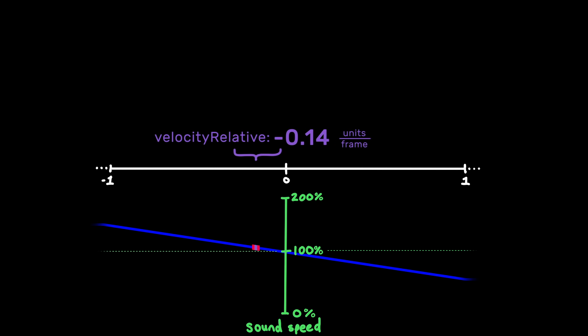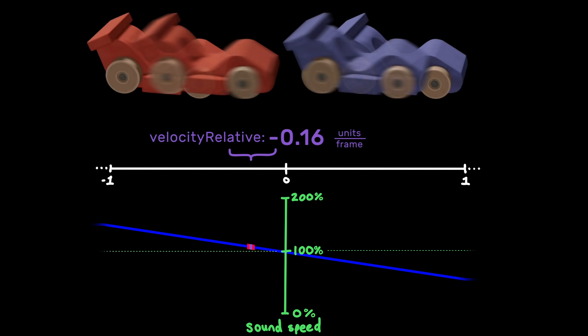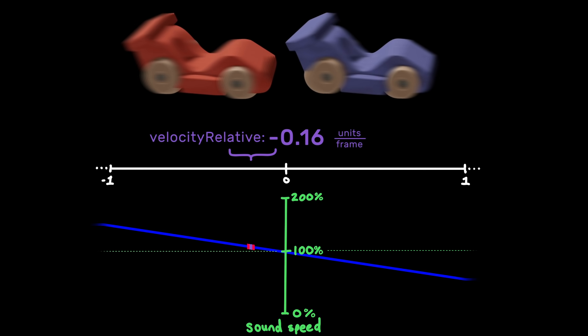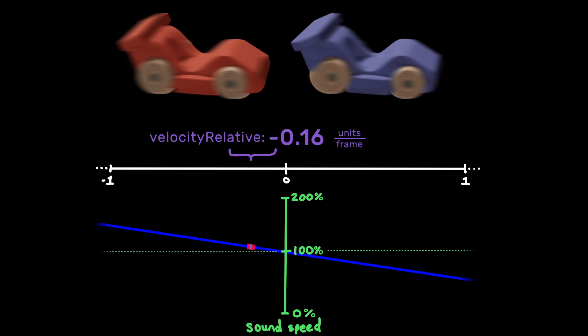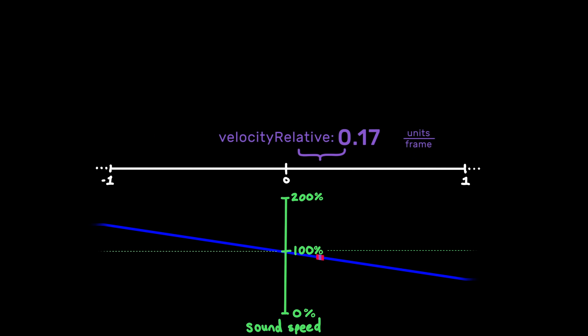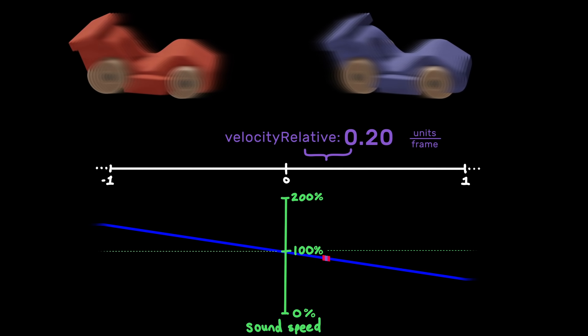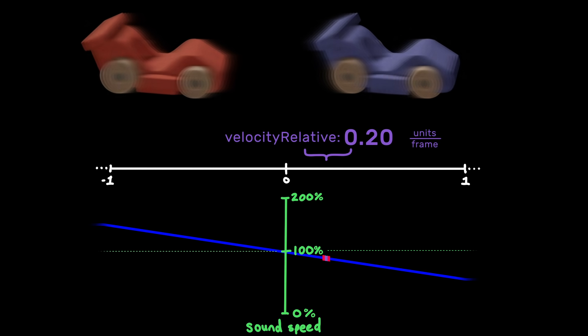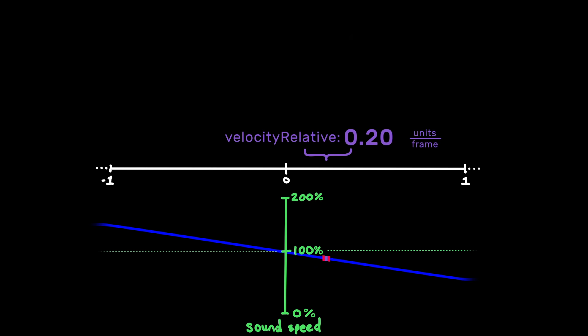Now, if velocity relative is negative, that means the distance between the carts is decreasing. And that corresponds to a sound speed greater than 100%. And conversely, if velocity relative is positive, that means the carts are getting farther apart, and the sound speed would be less than 100%.